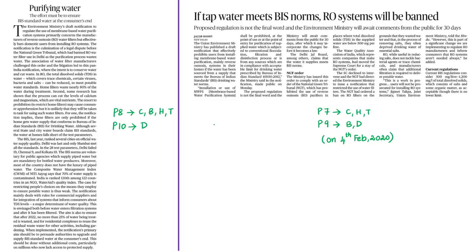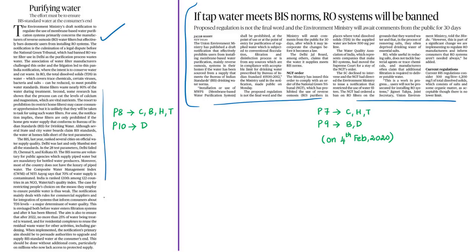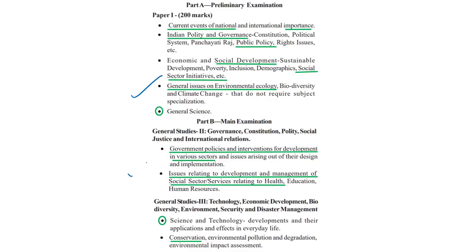This discussion is based on a draft notification recently released by the Union Environment Ministry, which prohibits users from installing membrane-based water purification systems. Two days ago an article appeared in The Hindu on this matter, and today an editorial has appeared on the same issue. We will first discuss the news article from two days ago, then move to the opinions raised in today's editorial.